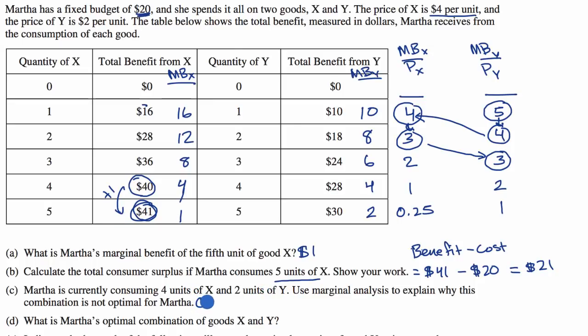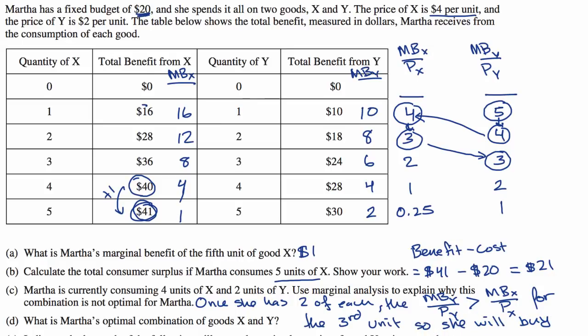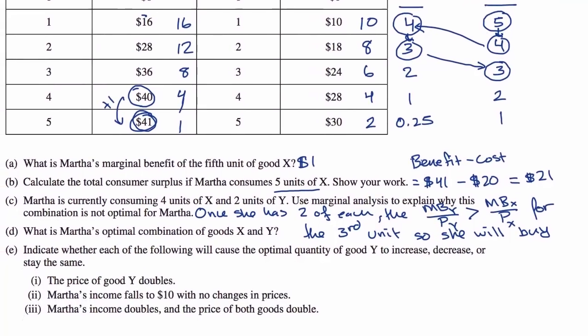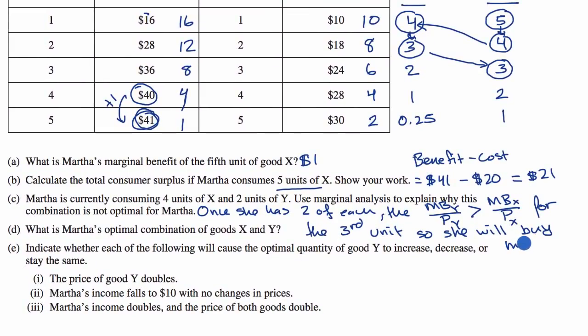We could say once she has two of each, the marginal benefit of Y per price of Y is greater than the marginal benefit of X per price of X for the third unit. So she will buy more than two Ys.